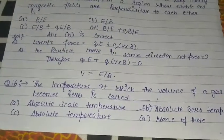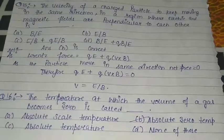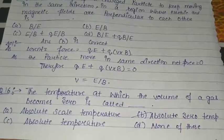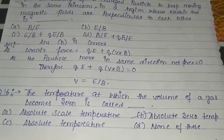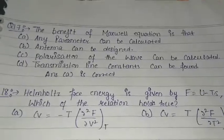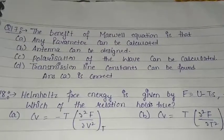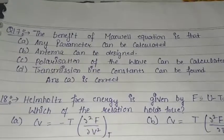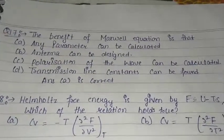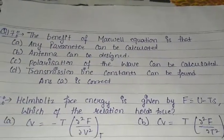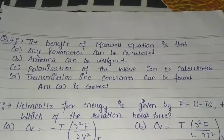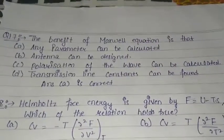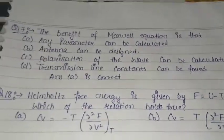Question number sixteen: The temperature at which the volume of a gas becomes zero is called — A. absolute scale temperature, B. absolute zero temperature, C. absolute temperature, D. none of these. Option B is the correct answer: absolute zero temperature. Question number seventeen: The benefit of Maxwell's equation is that — A. any parameter can be calculated, B. antenna can be designed, C. polarization of the wave can be calculated, D. transmission line constant can be found. Option A is the correct answer: any parameter can be calculated with the help of Maxwell's equation.